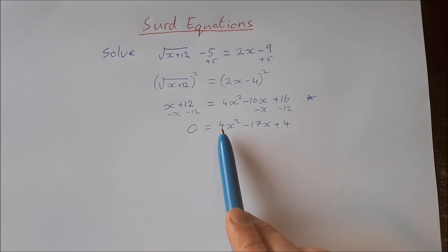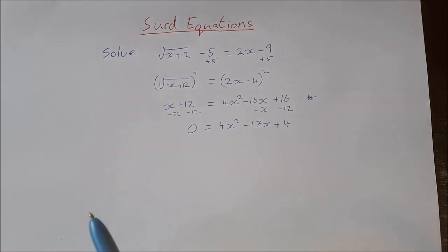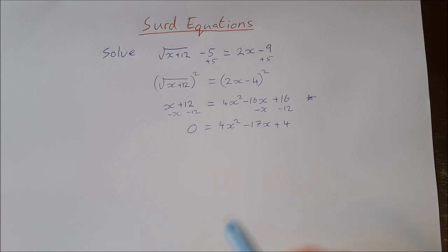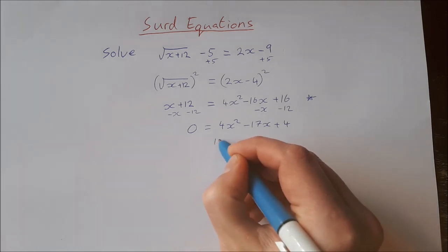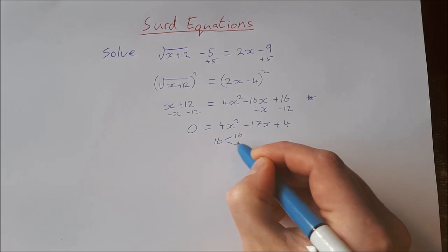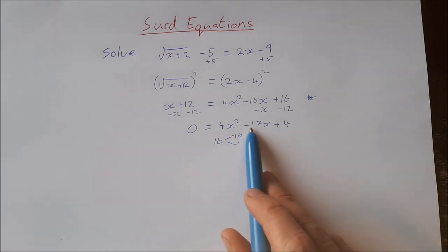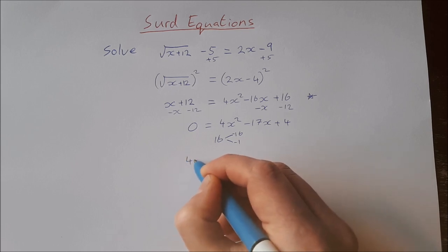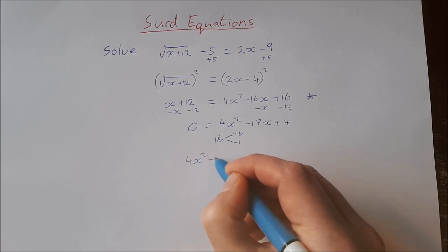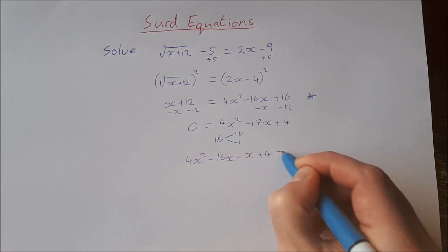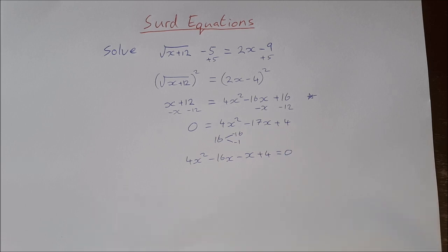So here we have our quadratic: 4x squared minus 17x plus 4. I'll use the guide number method for this. The guide number is 4 times 4, which is 16. We need factors of 16 that add to give minus 17 — that's 16 and 1, but they're both going to be negative to give us minus 17x in the middle.